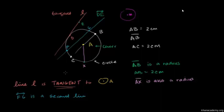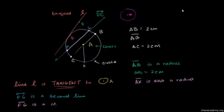Now, if FG was just a segment — if it didn't keep going forever like lines do — if we only spoke about this line segment between F and G and not thinking about going on forever, then we have a line segment which we would call a chord of the circle. A chord starts at a point on the circle and finishes at a point on the circle — so it connects two points on the circle.